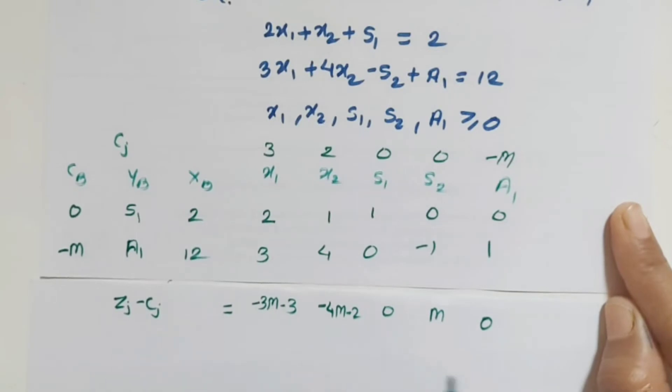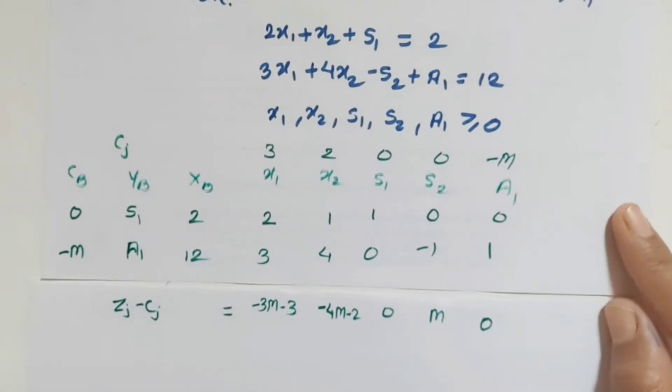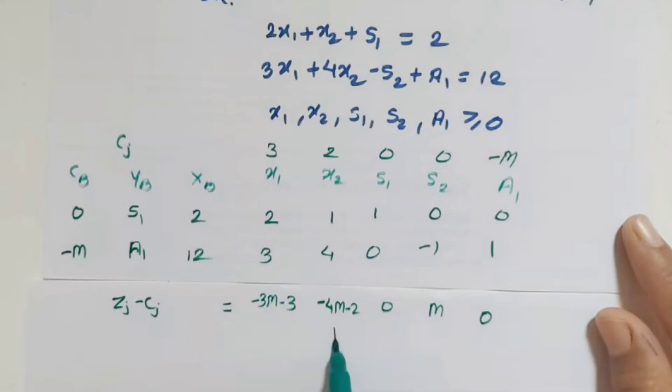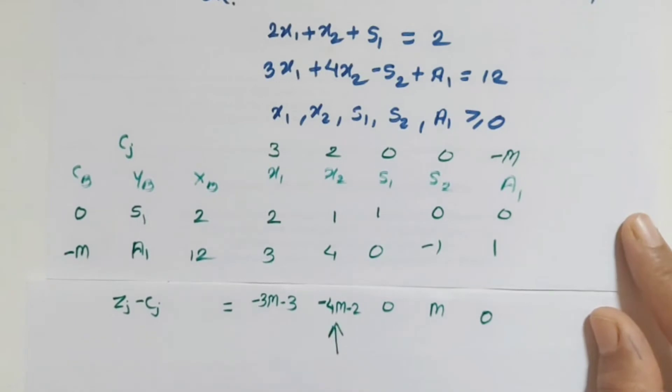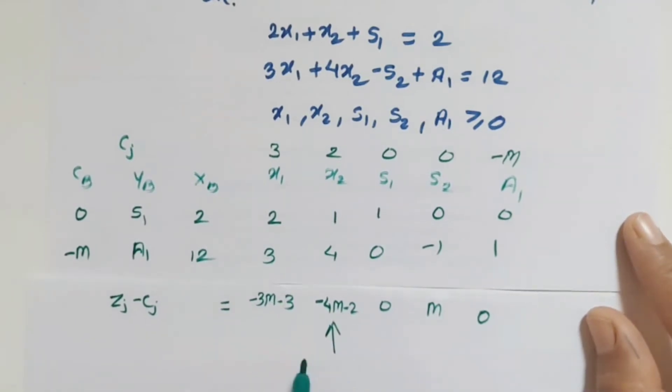Next term is 0, m minus m plus m, so it is 0. Now most negative number - because here all zj minus cj are not greater than or equal to 0. If all are greater than 0, then it is the final solution. If not, then take incoming vector. Which is incoming vector? Check it. Minus 4m minus 2, yes. Don't see here that minus 3 is greater or not - the m multiple is greater than 4, so it is an incoming vector. If you don't understand this, consider m to be 100.